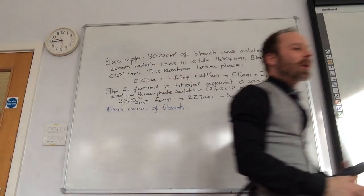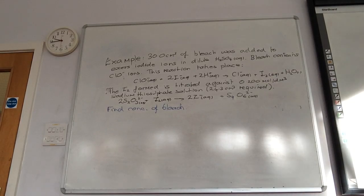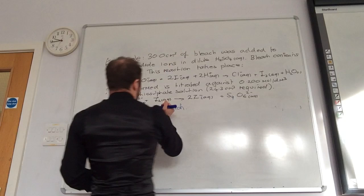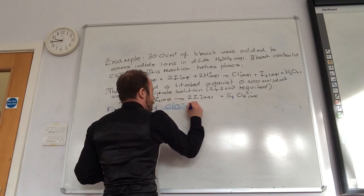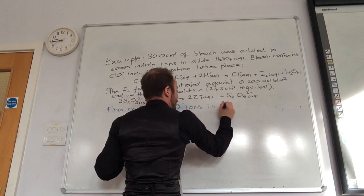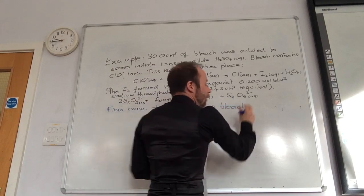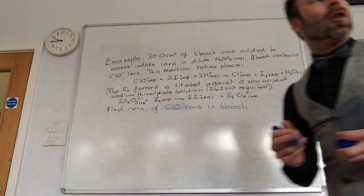That's my overall aim of this one. Concentration of CLO minus. Okay. So how do I always start these off?